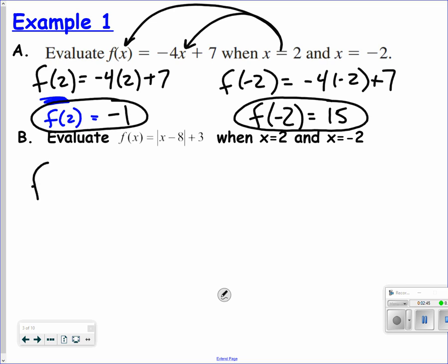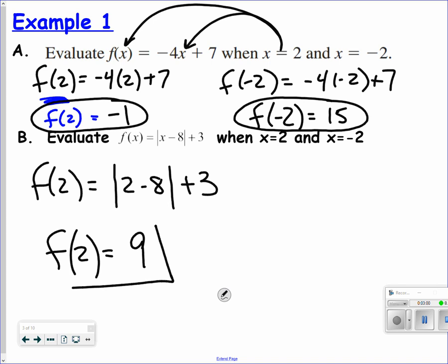This gives you a chance to explain more of what you're actually getting. So f of 2, when I put 2 into the f function, 2 minus 8 is negative 6. The absolute value of negative 6 is 6 plus 3 would be 9. So f of 2 equals 9.